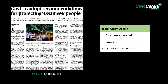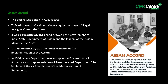The second article says that the Assam Government has decided to implement most recommendations of a panel appointed by the Ministry of Home Affairs to apply Clause 6 of the Assam Accord by April 15th, 2024. The Assam Accord was signed in August 1985 to mark the end of a violent six-year agitation to eject illegal foreigners from the state. It was a tripartite accord signed between the Government of India, the State Government of Assam, and leaders of the Assam Movement. The Ministry of Home Affairs was the nodal ministry for implementation, and in 1986, a new department called the Implementation of Assam Accord Department was set up.